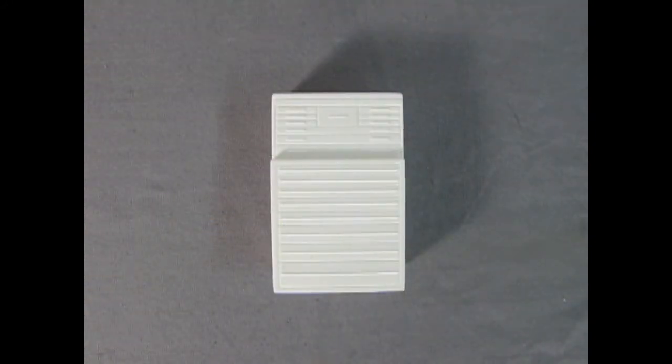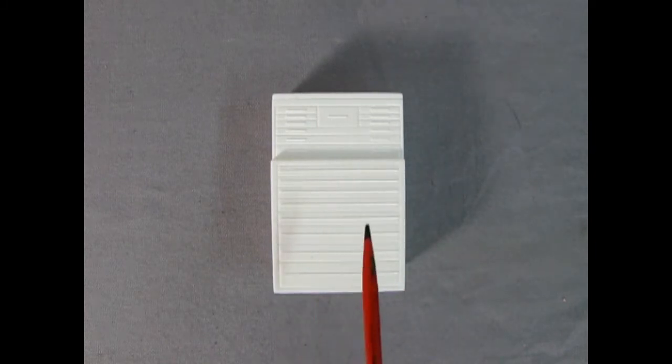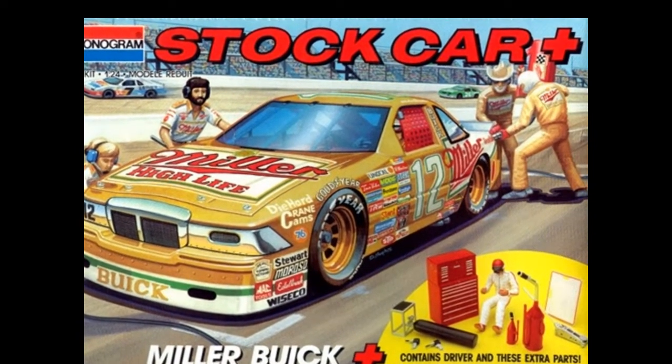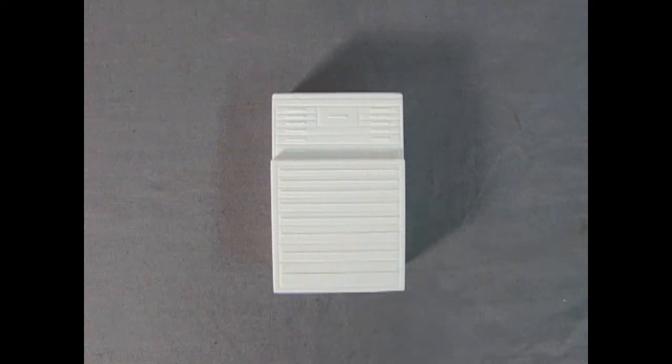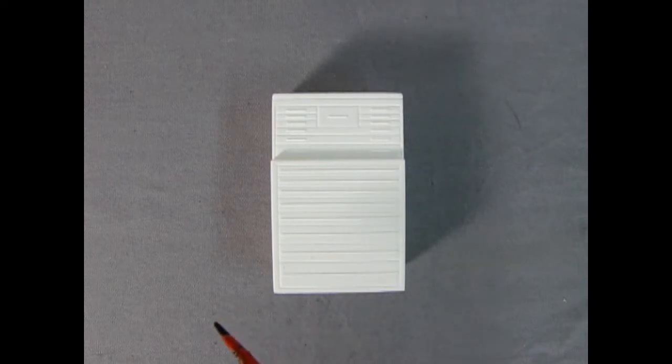I'm going to start off my 1930s garage build with this toolbox. This tool chest is actually 1/24 scale and I believe it came from those Monogram kits back in the late 80s, early 90s where they used to have the NASCARs and you got all these tools. The parts tree had a fuel jug with it. I'm going to build a 1930s garage using components from the junk box that people have given me throughout the years.